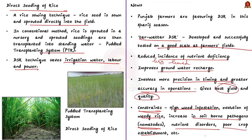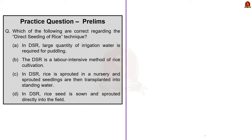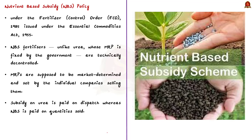Coming back to the question, options A, B, and C are wrong since they describe the conventional sowing method. Therefore, the correct answer is option D — in DSR, the rice is sown and sprouted directly into the field.